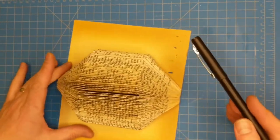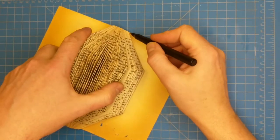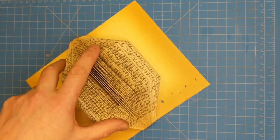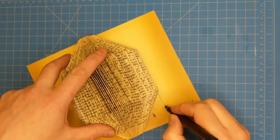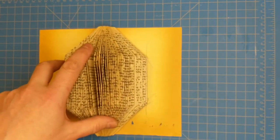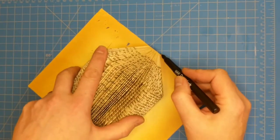Now with your pencil or pen, you're going to trace your hedgehog on the book. Both sides.